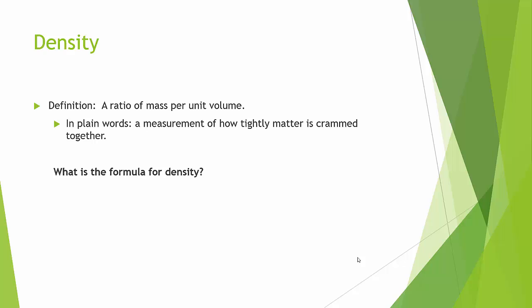Density, the definition, is just a ratio of mass per volume. What does that mean? In plain words, really, how tightly packed, or how much is matter crammed into a small space? Because look at what you have, the mass per unit volume.